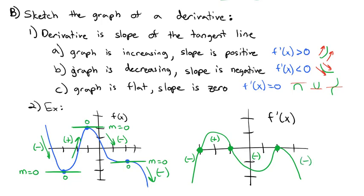So we've sketched approximately what the derivative of this function looks like. To summarize: if the graph is increasing, the derivative is positive; if the graph is decreasing, the derivative is negative; and if the graph is flat, the derivative is 0.